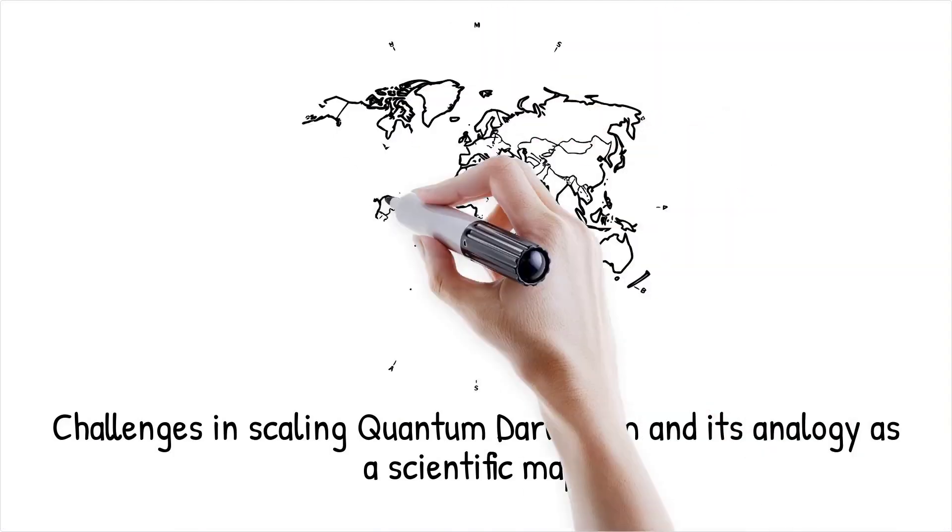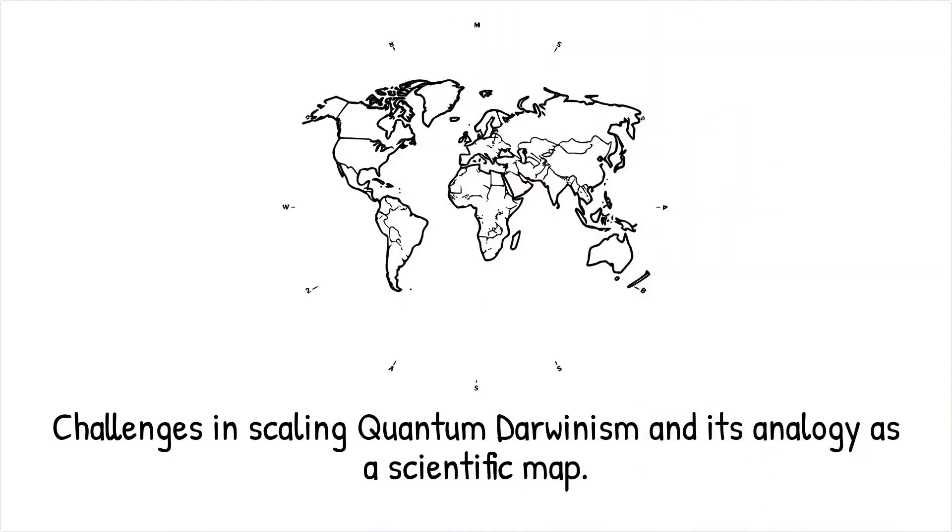Quantum Darwinism is like a new scientific map. While parts of the terrain have been explored and charted, many areas remain uncharted, awaiting future expeditions.